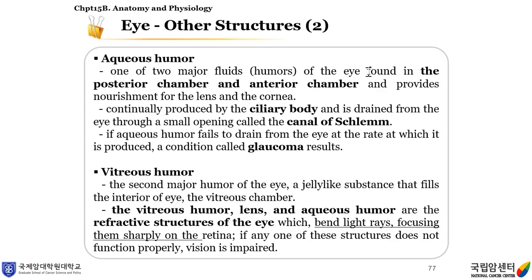Aqueous humor is one of two major fluids of the eye, found in the posterior chamber and anterior chamber, and it provides nourishment for the lens and the cornea. It is continually produced by the ciliary body and is drained from the eye through a small opening called the canal of Schlemm. If aqueous humor fails to drain from the eye at the rate at which it is produced, a condition called glaucoma results.